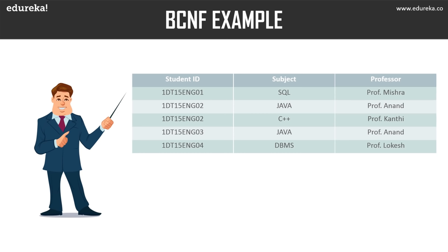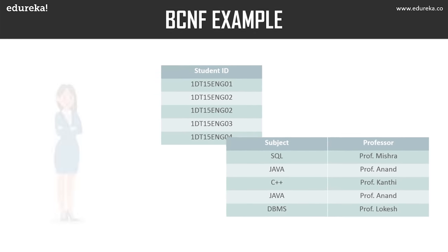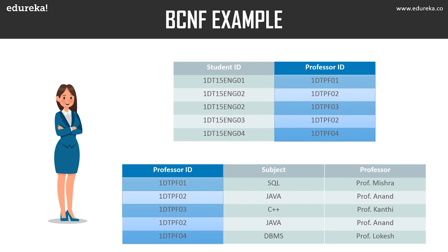There is one more dependency: professor depends on subject, and while subject is a prime attribute, professor is a non-prime attribute — which is not allowed by Boyce-Codd normal form. To satisfy BCNF, we divide the table into two parts. The first table holds student ID and a new column, professor ID. The second table holds professor ID, professor, and subject. By introducing professor ID as the super key of the second table, all remaining columns are functionally dependent on it, satisfying Boyce-Codd normal form.